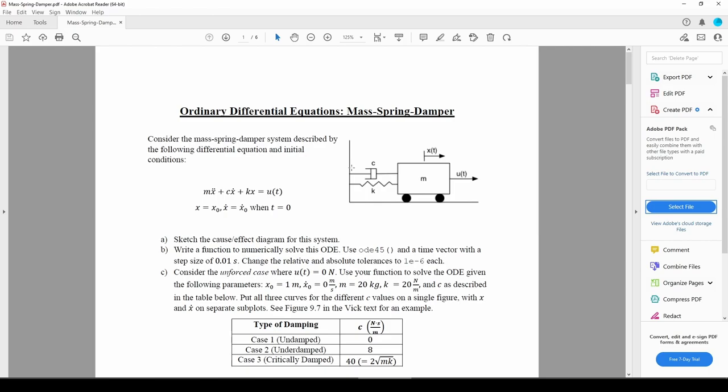It acts pretty similarly to the spring. If the mass is dragged to the right by the external force u of t, the damper will produce a force that acts opposite to u of t. Similar to how Hooke's law states that the spring force is f equals k times x, the force produced by the damper is f equals c times x dot. Whereas the spring force is proportional to the displacement of the mass, the damper force is proportional to the mass's velocity. Just as a higher k means you have a stiffer spring, a higher c means you have a damper which dissipates more energy out of the system.